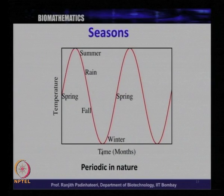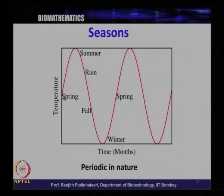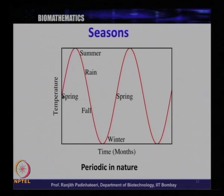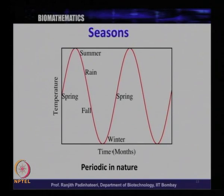Let us take temperature as a measure for a season. We are plotting a very schematic plot of temperature as a function of time. At spring — typically March — you have some value of temperature. As time goes to May, the temperature increases and this is where summer is. The temperature is at its peak in summer. Then in most parts of India, rain arrives around July, and the temperature somewhat decreases.